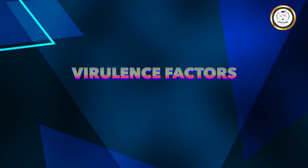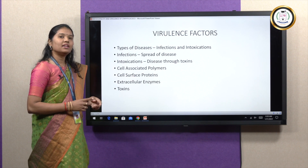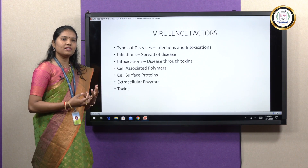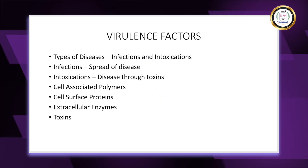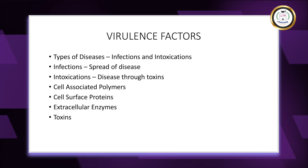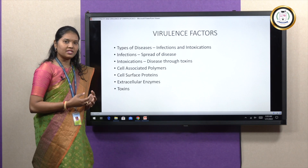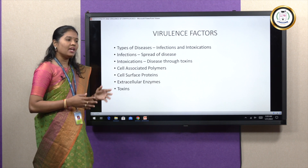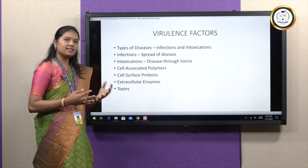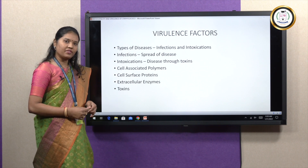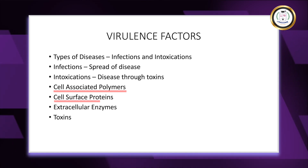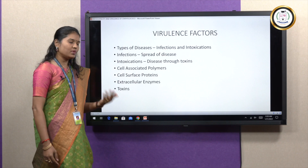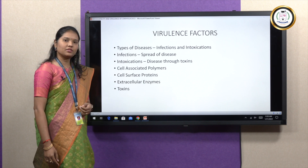Talking about the virulence factors: Staphylococci basically produces two types of diseases — infections and intoxications. Infections happen when organisms enter through the skin or subcutaneous tissue, invade the bloodstream, and spread through cells and tissues of the human or animal host. Intoxications happen when these organisms produce toxins inside the host, and those toxins cause the clinical manifestations. Infections are caused by cell-associated polymers, cell surface proteins, and extracellular enzymes, while intoxications are caused by different types of toxins.